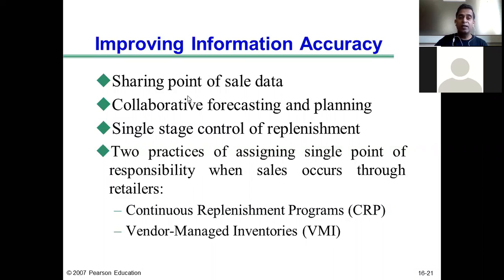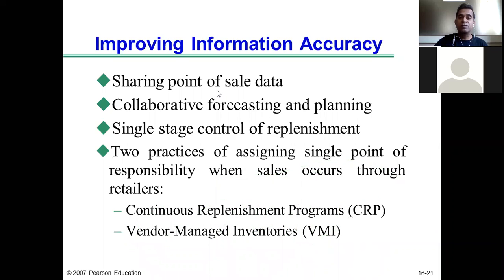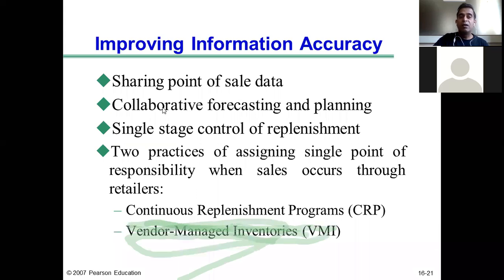This data is stored company-wise, customer-wise, and time-wise. If Walmart is willing to share the point-of-sale data of Procter & Gamble products, then Procter & Gamble will have real-time information about how much of its products are being sold by Walmart retail stores. However, such data sharing is difficult where the penetration of organized retail is very poor, like the six to eight percent level in India.